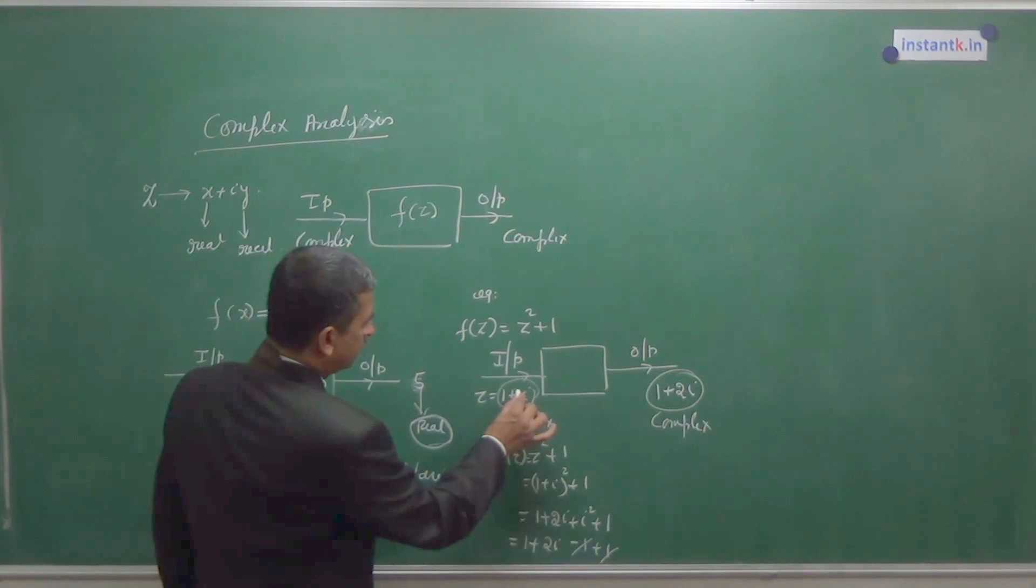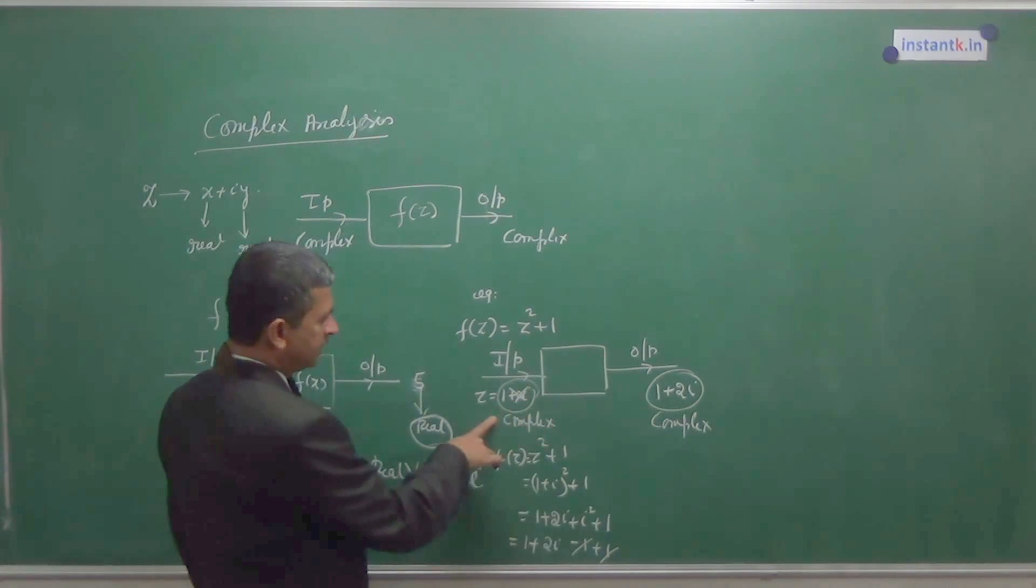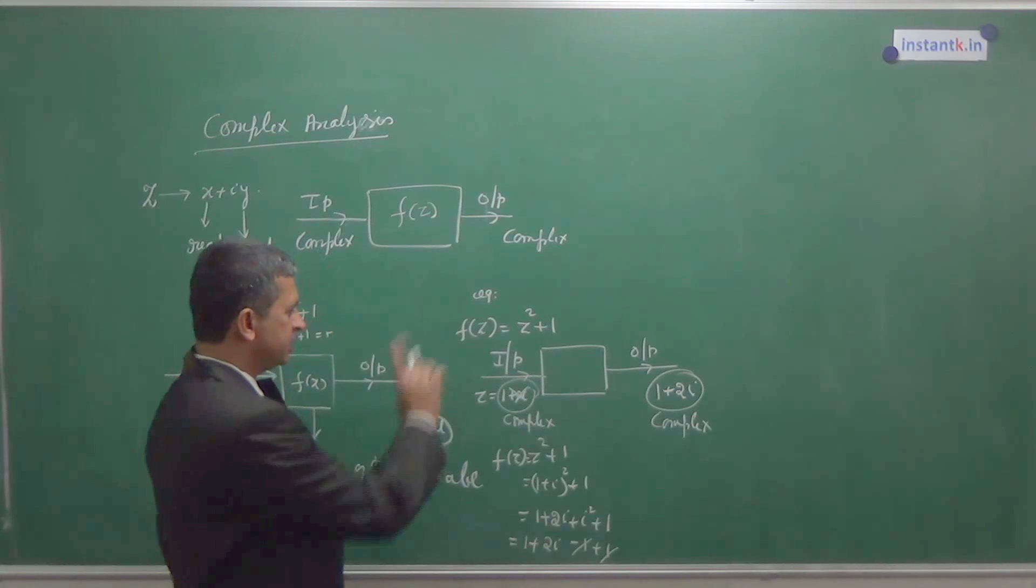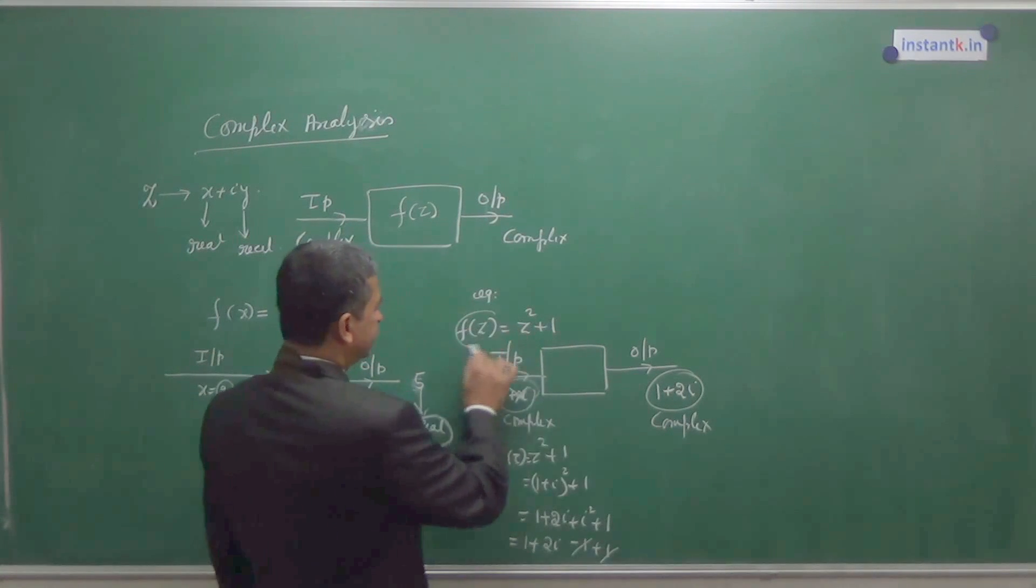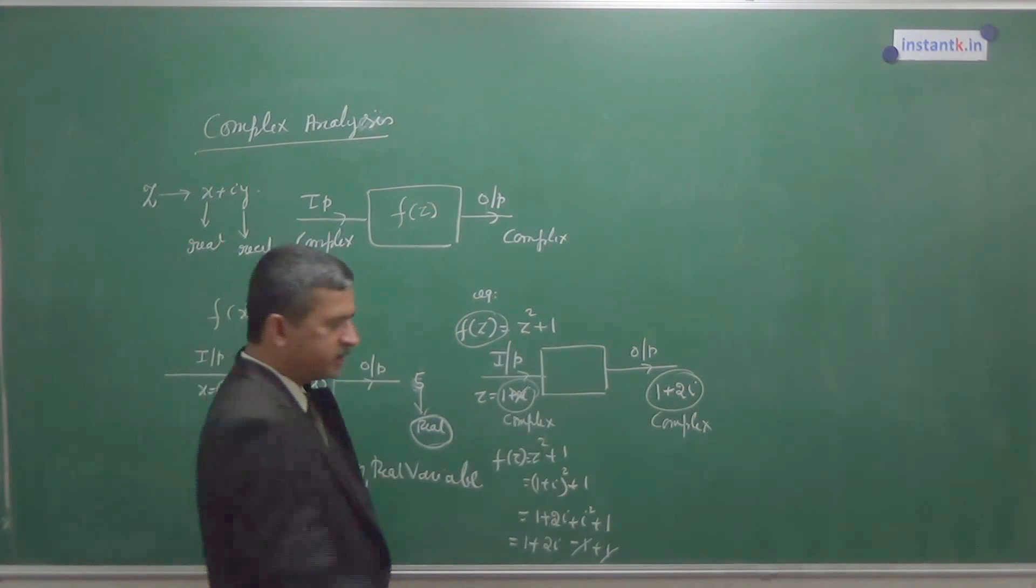In particular, if the imaginary part is 0, this turns out to be a real number. Output may be real or complex, depends on the function. Real valued, real output if you get. That is nothing but real valued real function. So this covers all four types of functions.